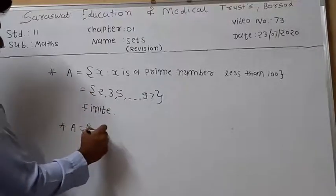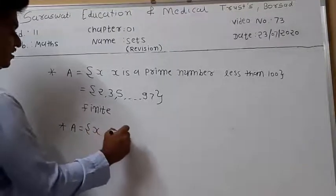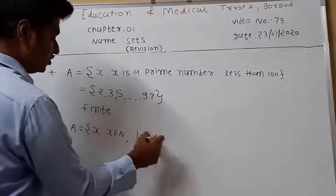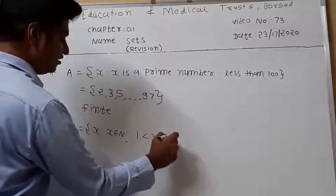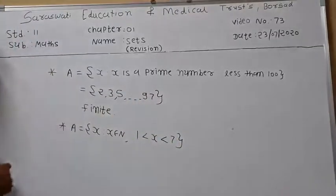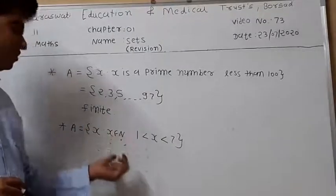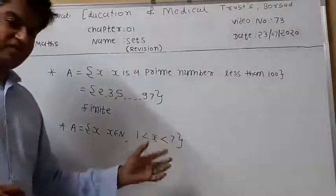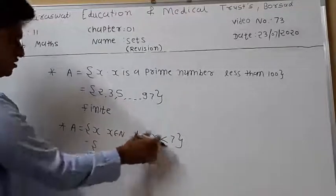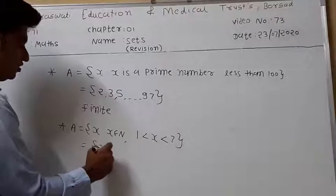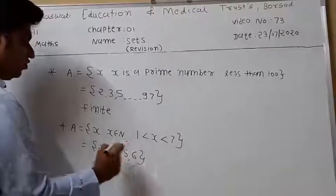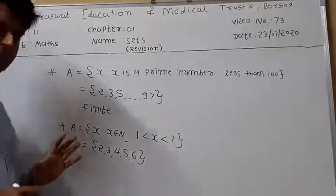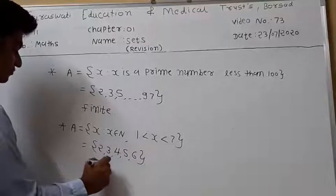Another example: suppose A equals {X : X belongs to N and 1 < X < 7}. The natural numbers between 1 and 7 are 2, 3, 4, 5, and 6. All these numbers are countable, so this set is also in finite form.